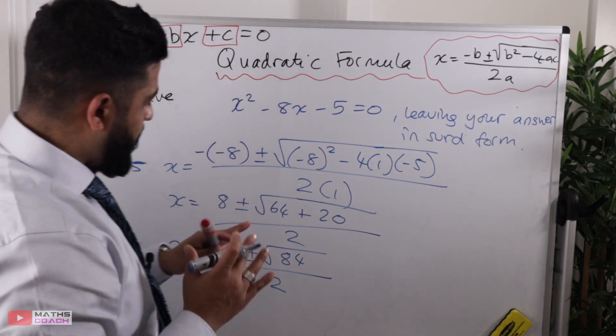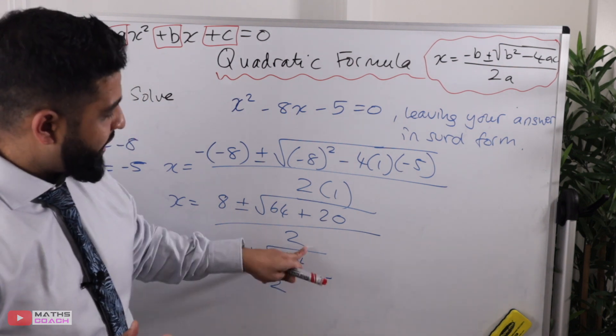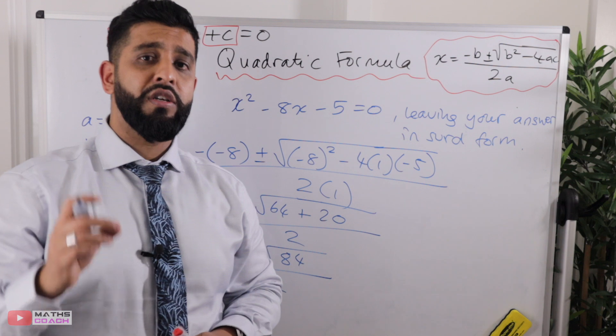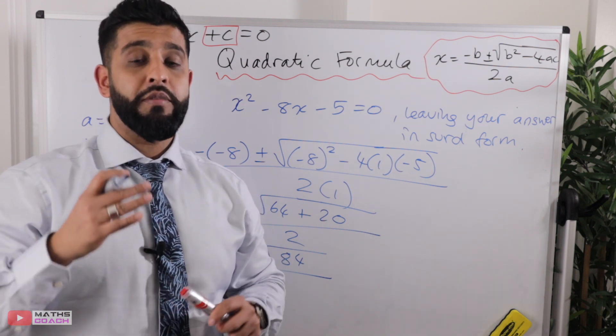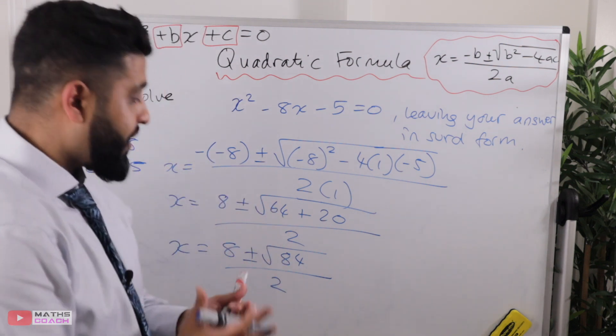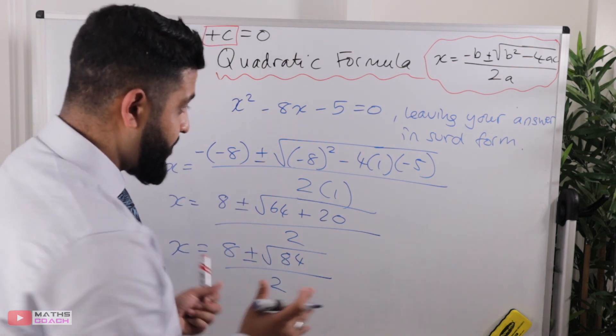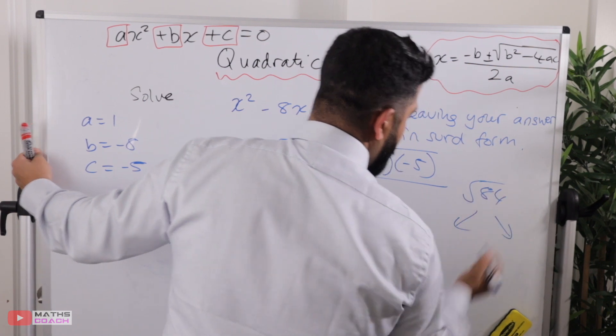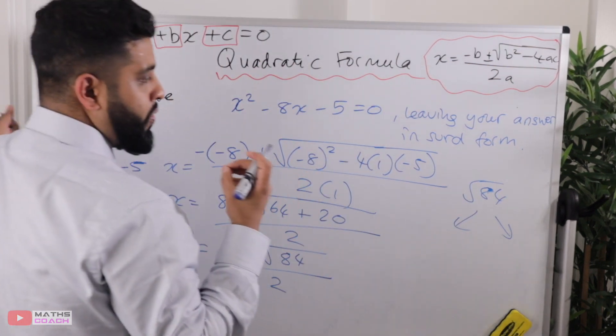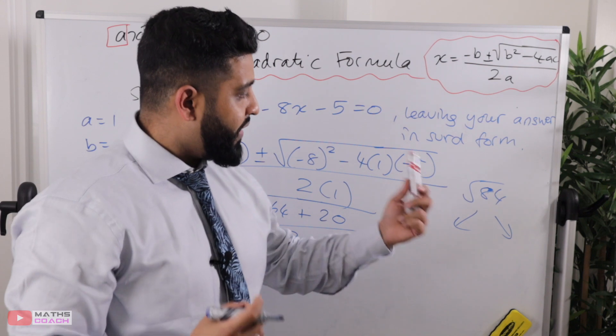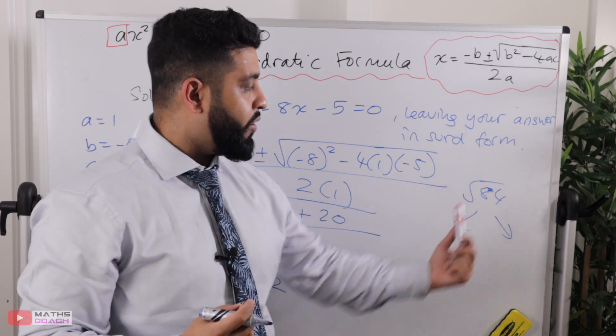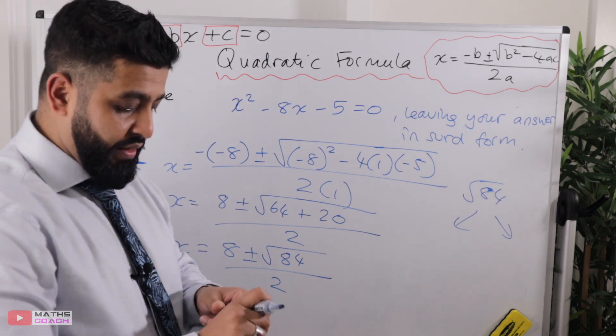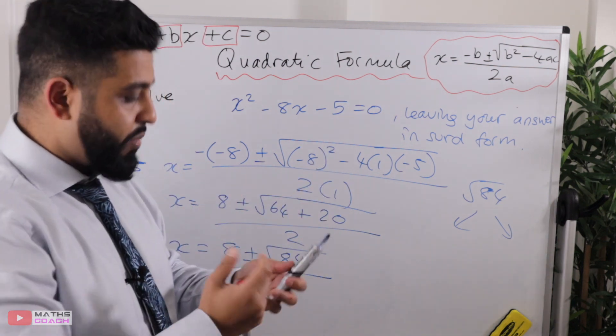Now we want to break up that root 84. If you are unsure, please refer to my lesson on surds. It's got everything on how to simplify a surd, but I'll do this one here for you as reference. We want to divide by the largest square number that goes into 84. If you don't know that straight away, it's not a problem. Start with the smaller ones, and then you can just simplify further.